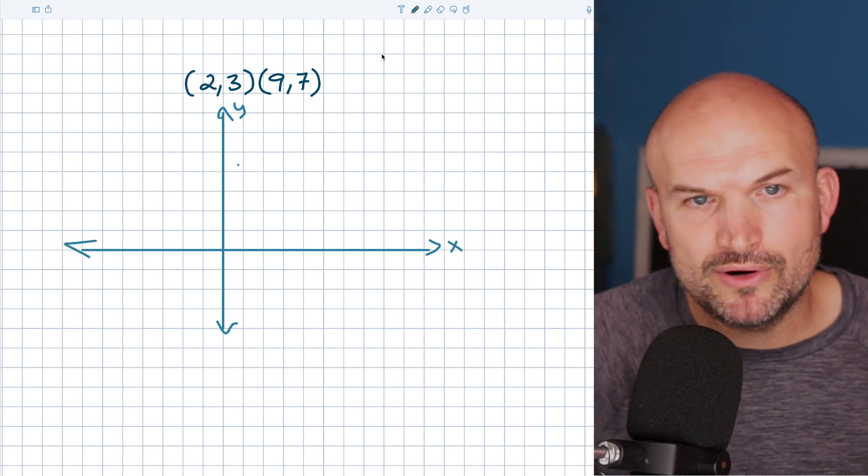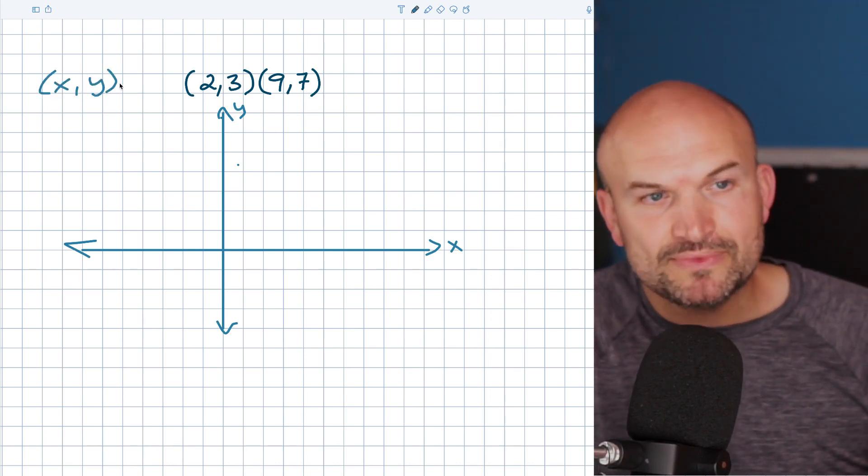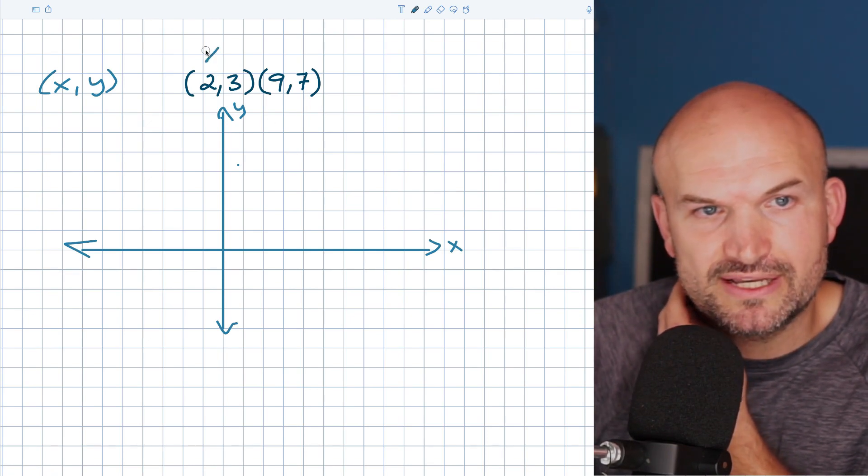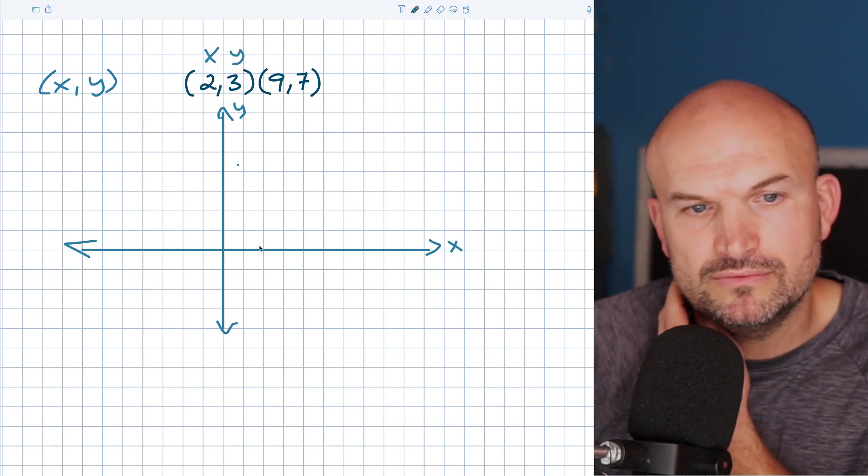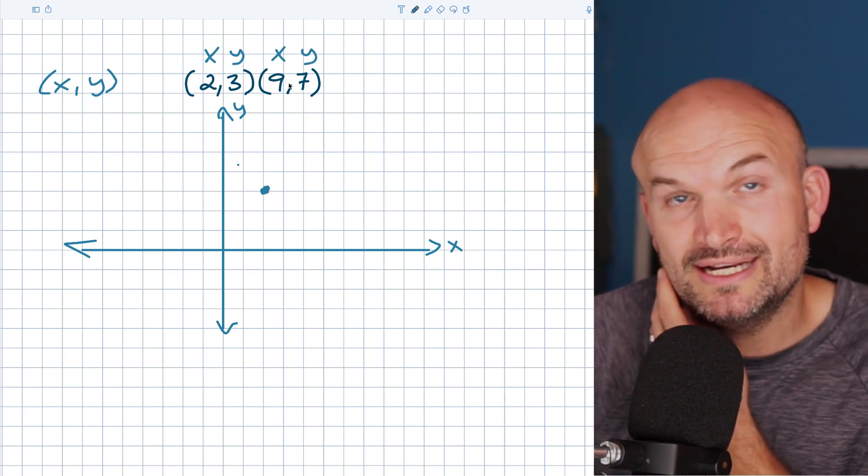And then here is going to be my X axis. Now remember when we're plotting points on X, Y axis, we're just going to use, the first point represents the X coordinate and Y represents the Y coordinate. So if I was going to plot this X, Y, I'm going to go over two and then up three, one, two, three.